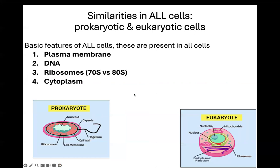So the basic features of all cells — what are things that are common in all cells? All cells in the world have a plasma membrane, which is also called a cell membrane, and it's important because it controls the movement of substances in and out of a cell. All cells have DNA, which is the genetic information. All cells have ribosomes, and ribosomes make protein. Later, you're going to learn that protein controls everything in an organism or in our body.